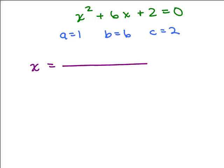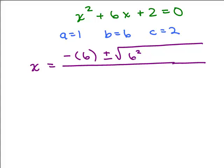x equals... I've got the opposite of b, so opposite of 6, negative b plus or minus the square root of b², that's 6², you don't have to put a parenthesis around the 6 because it's not negative and it won't make any difference when it's already positive, minus 4ac, so that's 4 times 1 times 2, all over 2a, 2 times 1.